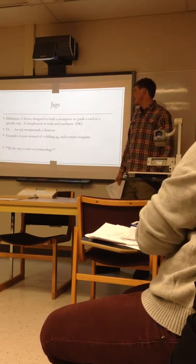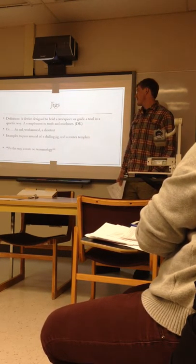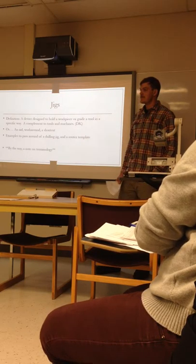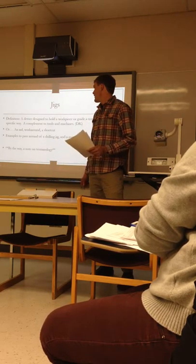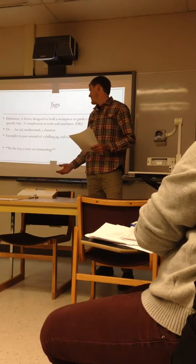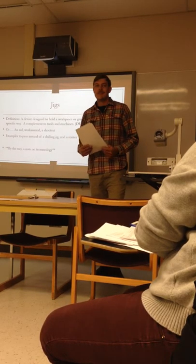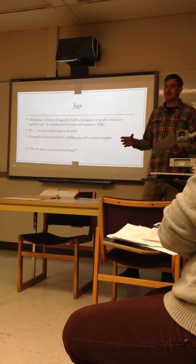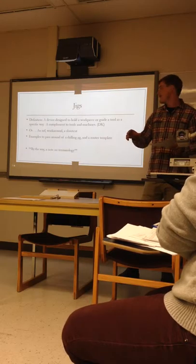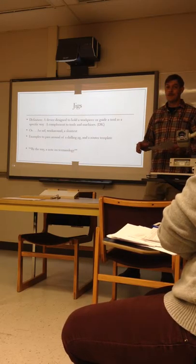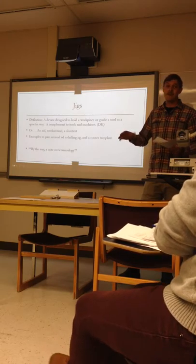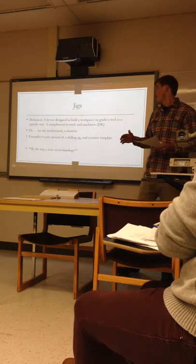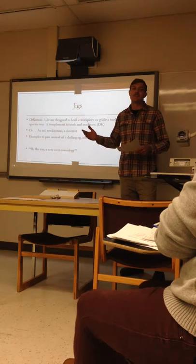By definition, a jig is a device designed to hold a workpiece or guide a tool in a specific way. It's a complement to tools and machines — an aid, a workaround, or a shortcut. It's something that you build to either help you do a job, to allow you to do a job you can't do otherwise with a machine, like modifying the function of a machine, or a shortcut to eliminate steps from a process.